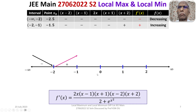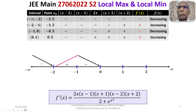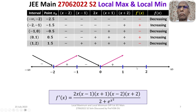For (−1, 0), test point x = −0.5 gives three negatives and two positives — product is negative, so f(x) is decreasing. For (0, 1), test point x = 0.5 gives two negatives and three positives — product is positive, so f(x) is increasing. For (1, 2), test point x = 1.5 gives one negative and four positives — product is negative, so f(x) is decreasing.